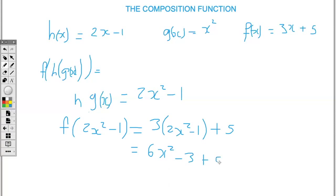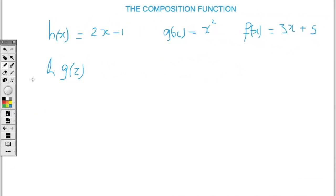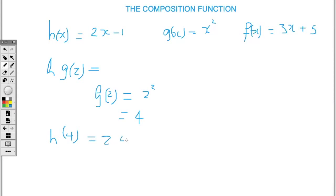Then this result I'll be substituting into f. So f: I'm going to substitute 2x squared minus 1 where I see the variable x. So I'll have 3 open bracket 2x squared take away 1, plus 5. Expanding: 3 times 2 gives 6x squared, 3 times negative 1 is negative 3, plus 5. So this is 6x squared minus 3 plus 5, which gives us 6x squared plus 2.